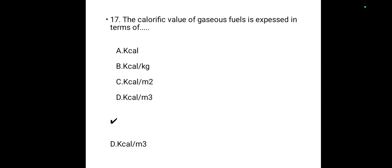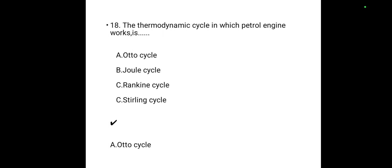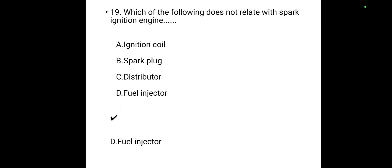The calorific value of gaseous fuel is expressed in kilocalories per cubic meter. The thermodynamic cycle on which a petrol engine works is the Otto cycle — answer is A. Which of the following does not relate to a spark ignition engine? The answer is D — fuel injector.